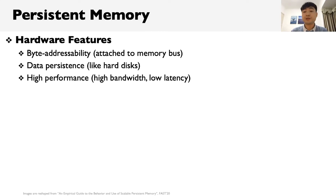Over the past 10 years, non-volatile memory technologies such as Persist Memory have been widely studied due to their many promising hardware features. Persist Memory sits on the memory bus and connects directly to a processor-integrated memory controller, so CPUs can access it using load and store instructions with better addressability. It can also store data like hard disks that survive power outages. Most importantly, it delivers high bandwidth and low latency, which is comparable to that of DRAM.